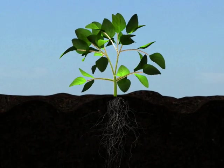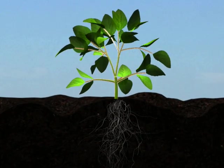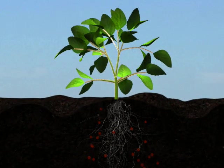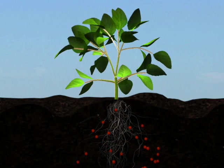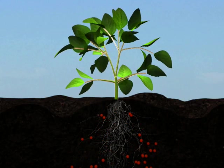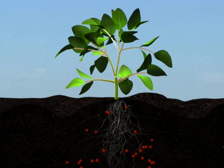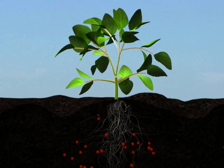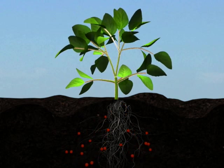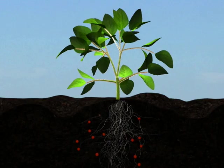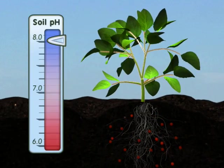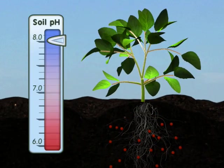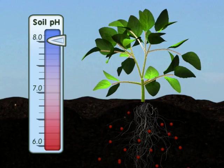We will follow the mineral iron as it makes its way into a soybean plant. To grow properly, plants extract iron from the soil. For this process to be successful, iron must be available in a soluble form. It cannot be absorbed by the plant without first being made soluble. But under certain conditions, such as high pH, most of the iron is bound to soil particles and only a small amount is soluble and available to the plant.